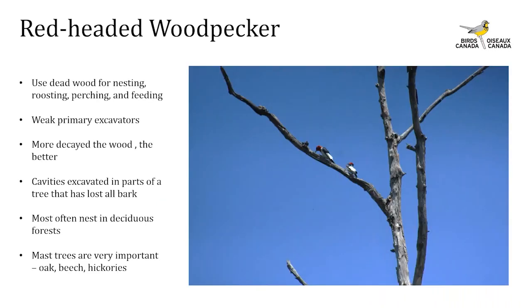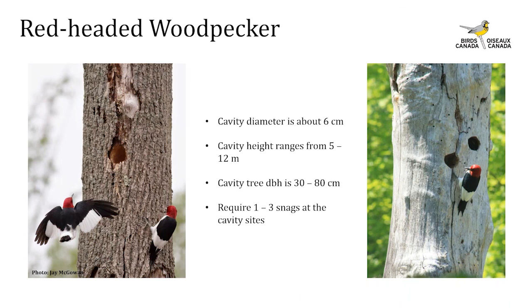Dead wood is very important for red-headed woodpeckers — not just for cavity excavation but for roosting, perching, and feeding. They are weak primary excavators, so the more decayed the wood the better. Cavities are excavated in dead trees or dead parts of live trees, most often snags that have lost most of their bark. Their cavity diameter is about 6 cm, height ranges from 5 to 12 meters, and tree diameter from 30 to 80 cm DBH. At least one to three snags must be in the immediate vicinity of the nest.